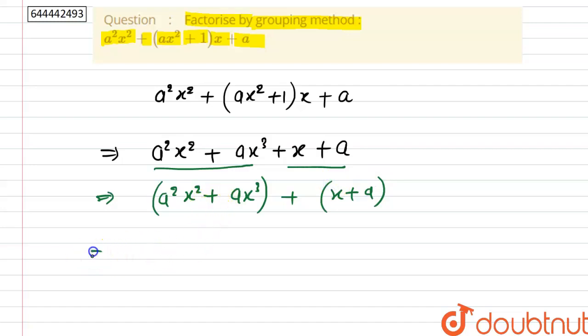In the first group, we can take ax² as common, then we will get ax²(a + x) + 1(x + a).